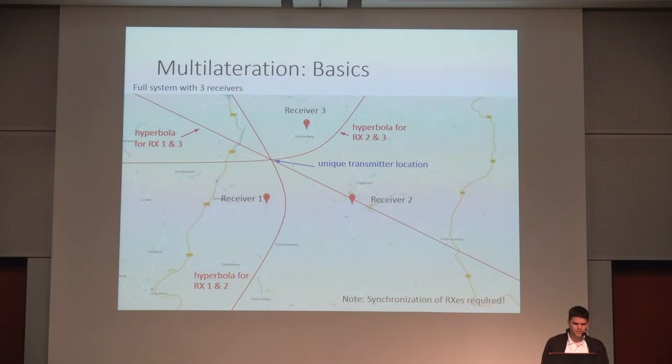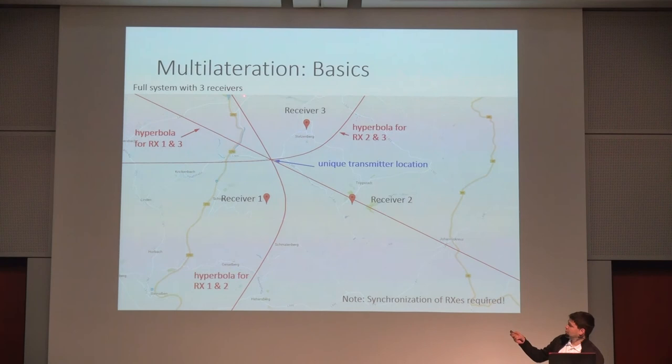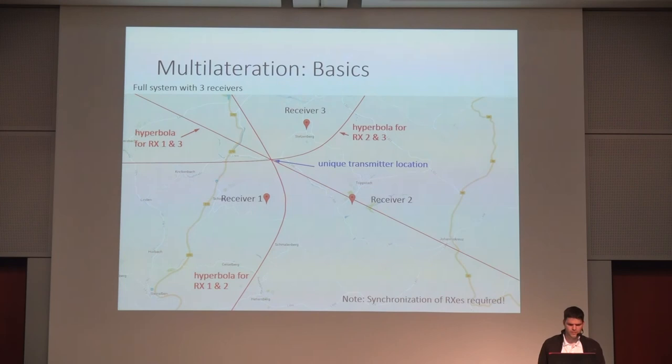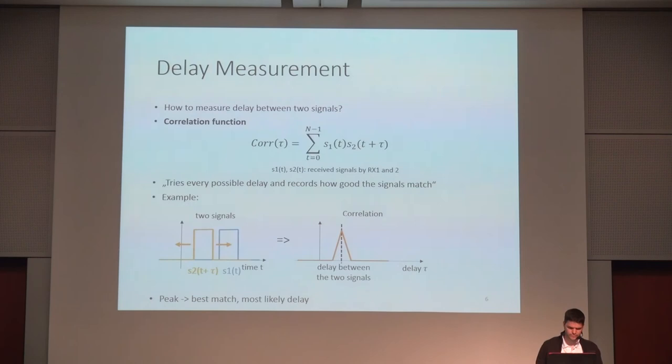To get a unique position of the transmitter you need a third receiver. You generate a hyperbola for each receiver pair — one for receivers one and two, one for one and three, and a third one — and in the ideal case they intersect at one unique position, which is exactly the transmitter's location. One important thing is that the receivers must be synchronized in time.